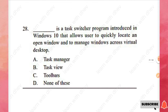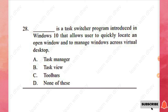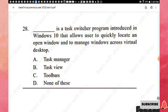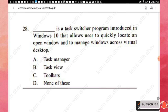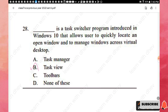Question 28: Which task switcher program introduced in Windows 10 allows users to quickly locate an open window and manage windows across a virtual desktop? Options are: Task Manager, Task View, Toolbars, or None of these. The right answer is option B — Task View.